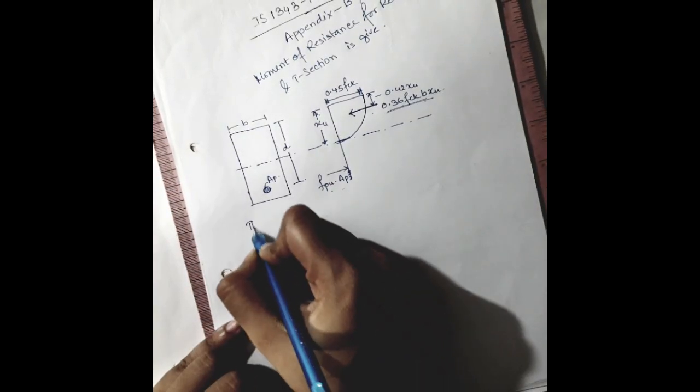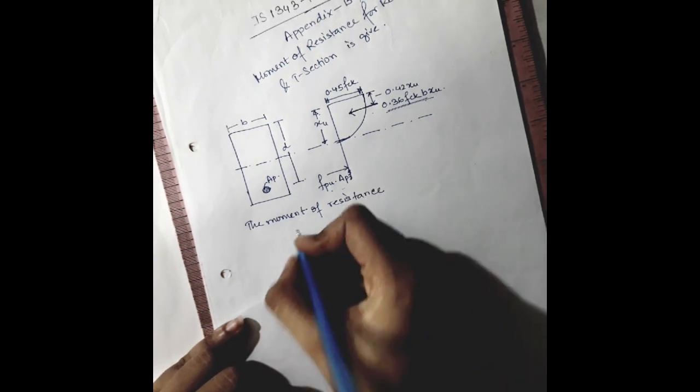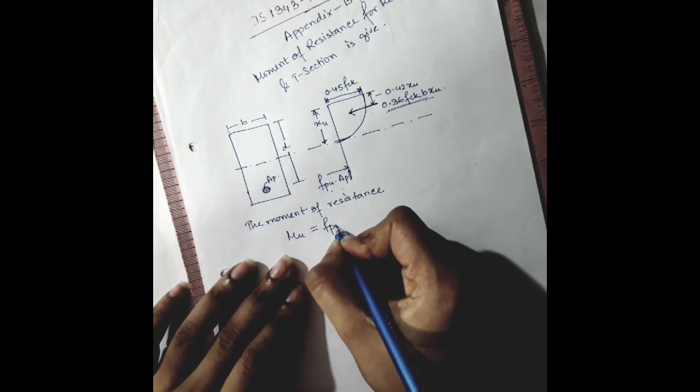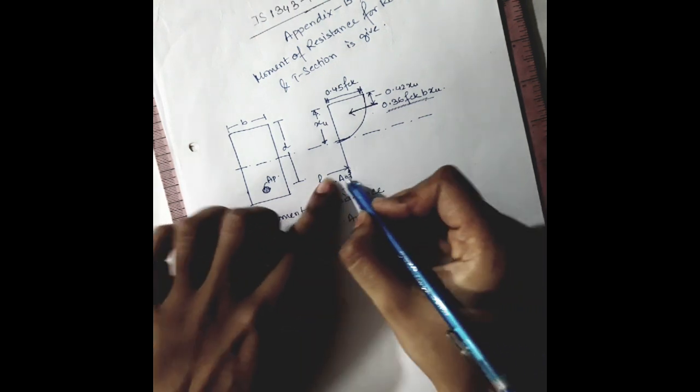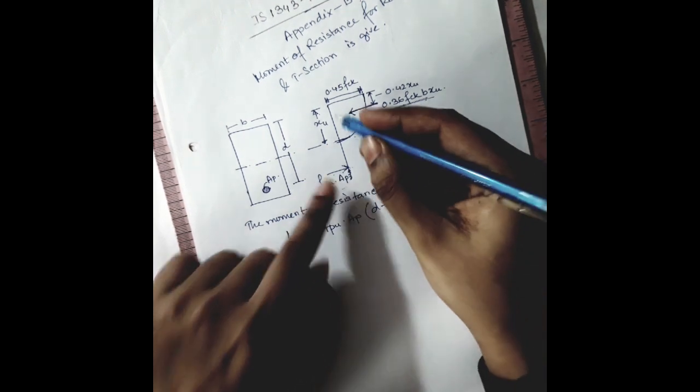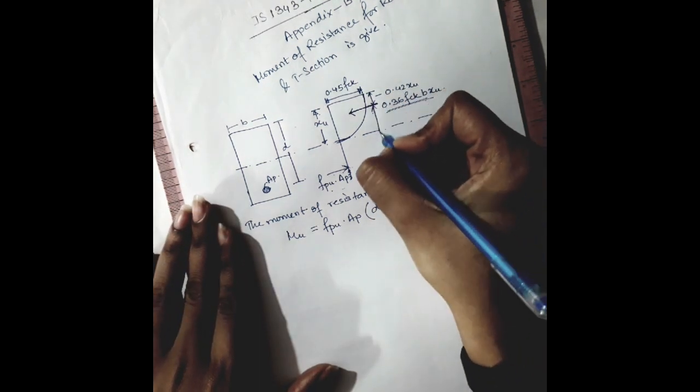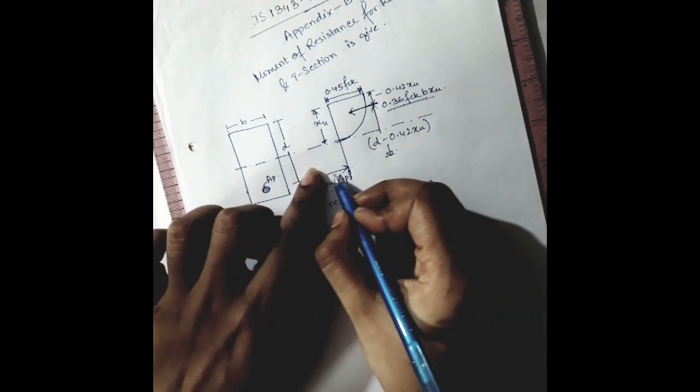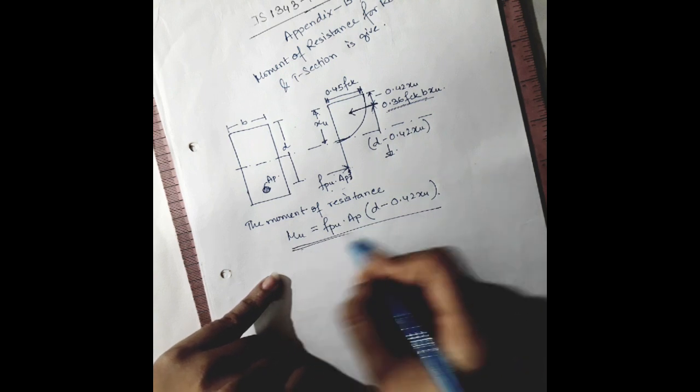The moment of resistance was obtained as Mu equal to fpu times Ap times (D minus 0.42 xu). This force times the perpendicular distance, which will be D minus 0.42 xu, gives us the rest of the length.